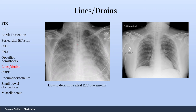How do you determine ideal endotracheal tube placement? It should be within 5 centimeters of the carina — 5 plus or minus 2 centimeters. You can see the carina branching here, and you measure the endotracheal tube's distance. If it's within 5 centimeters of the carina, it's a well-placed endotracheal tube.